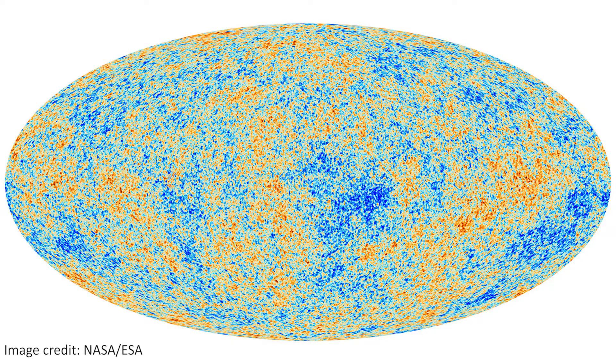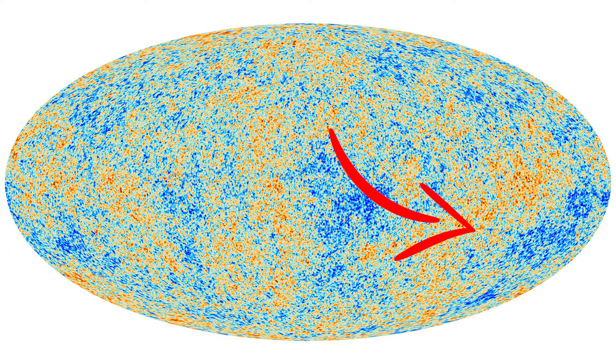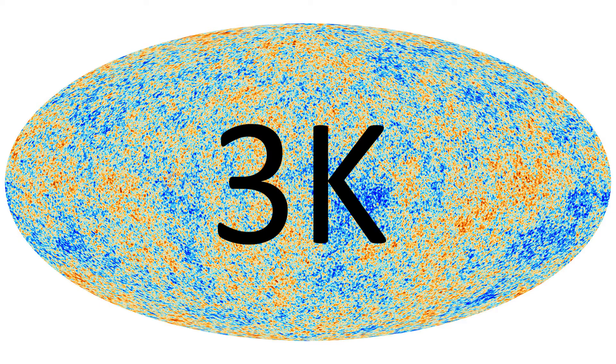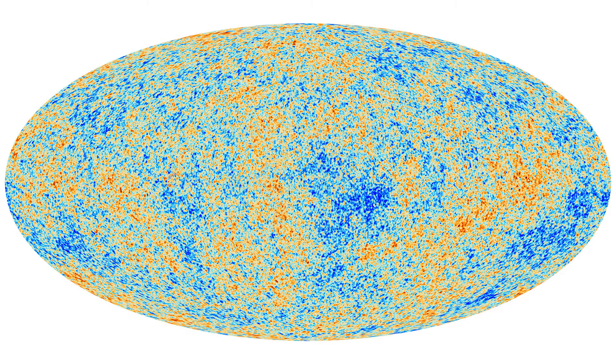On this CMB sky map, the red areas are patches of light where the temperature had a slightly higher value than the average, and the blue spots have a temperature slightly lower than average. That average is about three Kelvin, and the deviations are absolutely tiny. These fluctuations in the CMB temperature are sensitive to the existence, amount, and distribution of both normal matter and dark matter, but in different ways, and mapping the size and frequency of the fluctuations tells us that dark matter must exist.